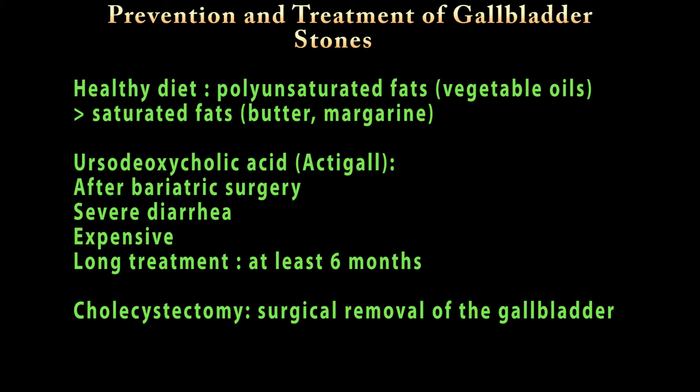To help prevent gallbladder stone formation, a healthy diet should be followed. A medication called ursodeoxycholic acid can help prevent gallstone formation, especially after weight loss surgery. However, it is expensive and has side effects.